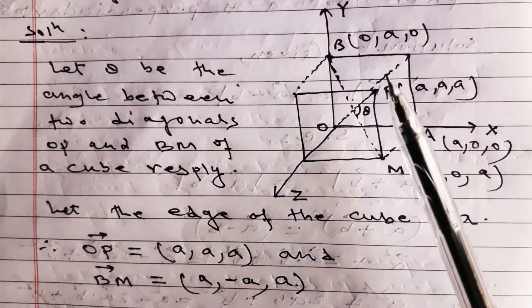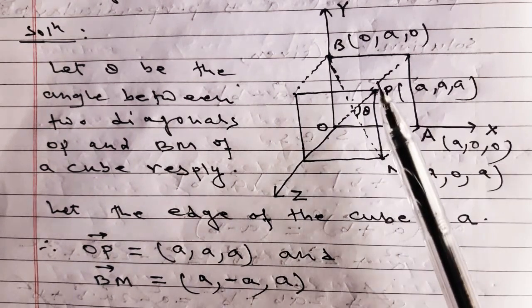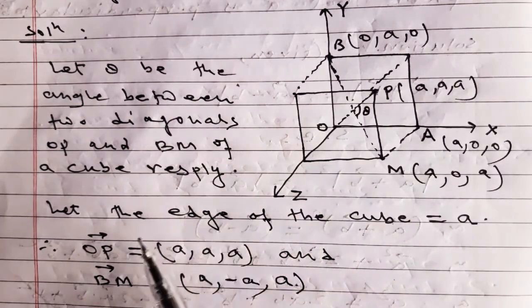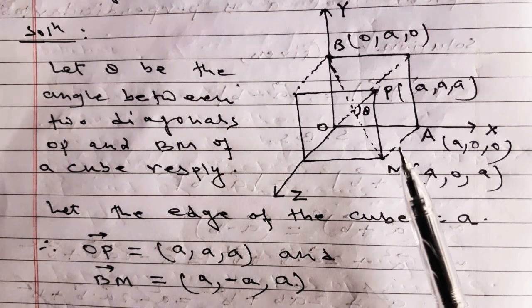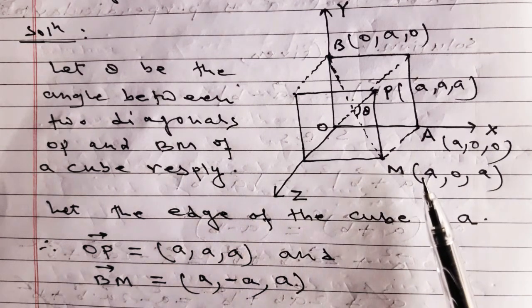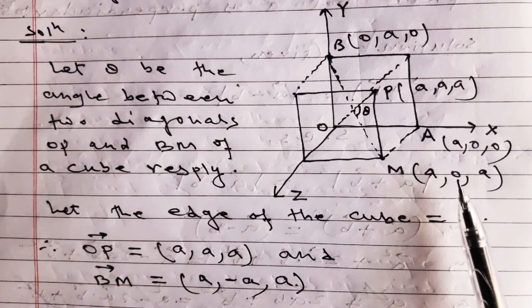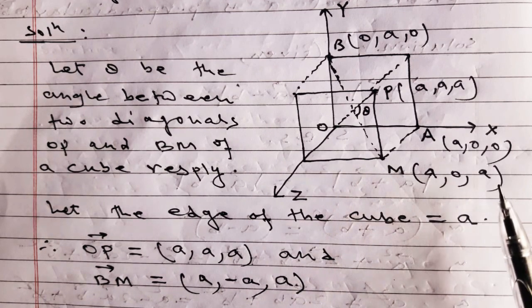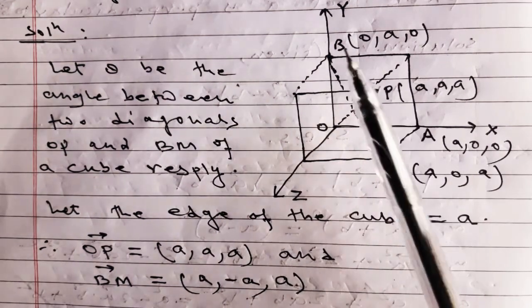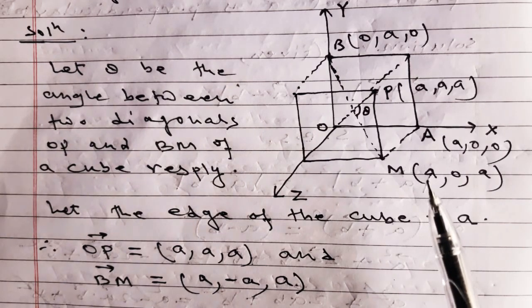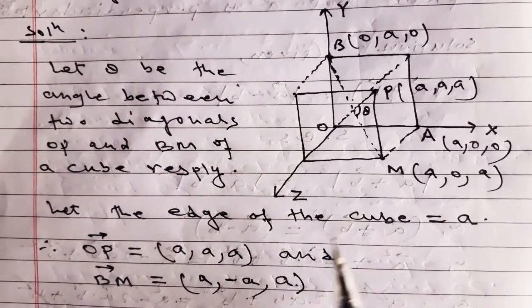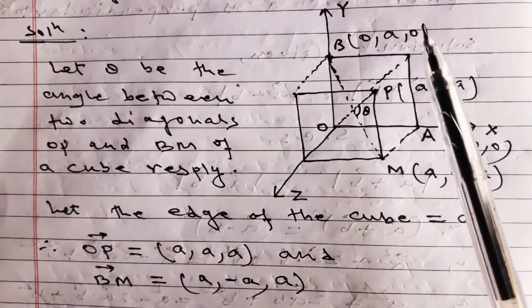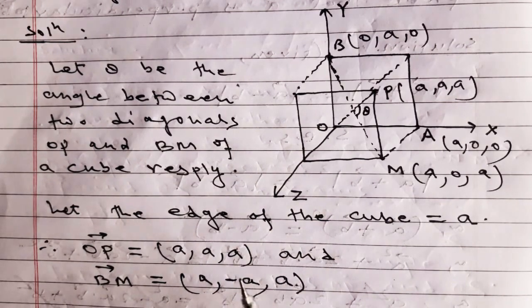Vector OP = (A, A, A) since P has coordinates (A,A,A). For vector BM: BM = M - B = (A-0, 0-A, A-0) = (A, -A, A). So vector BM = (A, -A, A).